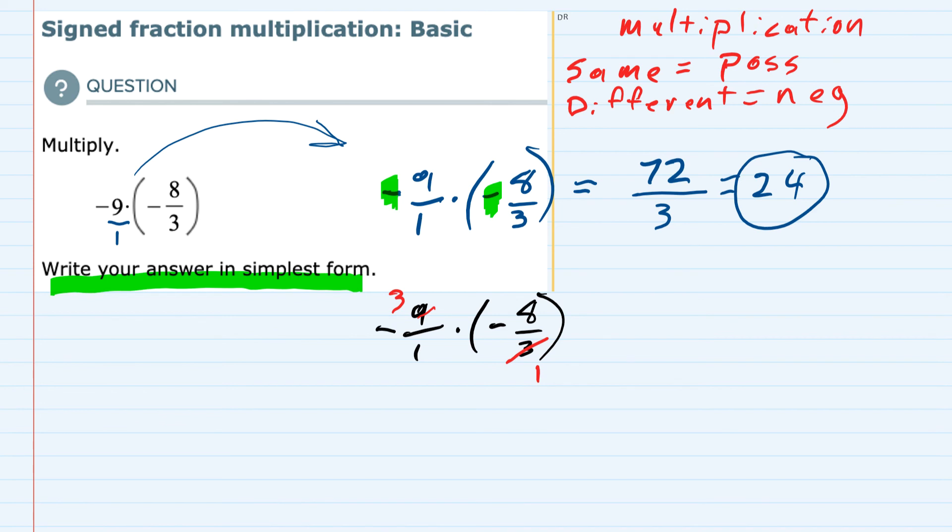And if I multiply now that I've gotten reduced fractions, in the top, the 3 times the 8 is 24. And in the bottom, I have 1 times 1, which is 1. Again, the signs are the same, so my result is positive. So it's a positive 24 over 1, which is 24.